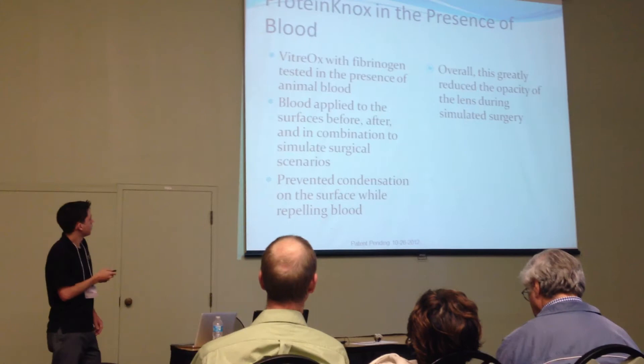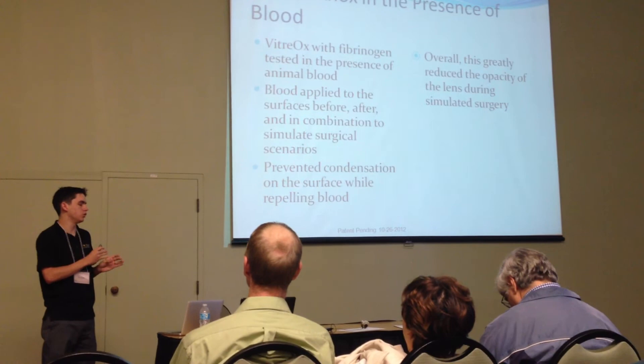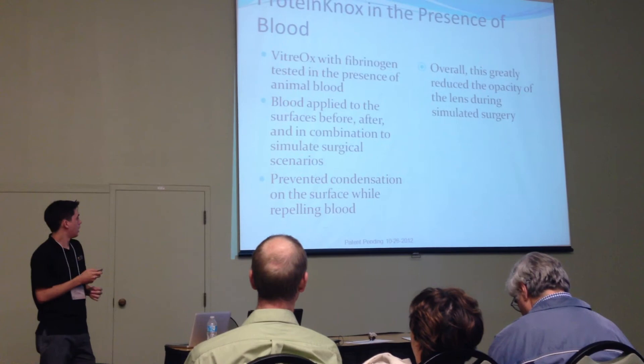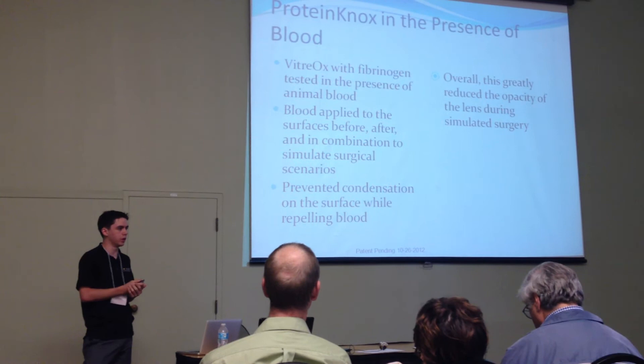In conclusion, once we had our fibrinogen mesh along with the Vitriox, it did successfully continue to prevent fogging without obscuring our Vitriox application. Our future applications are to continue testing other blood proteins as well as whole blood itself, to ideally eliminate all other future complications with our Protonox model.